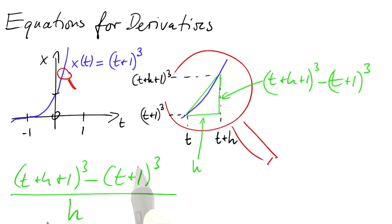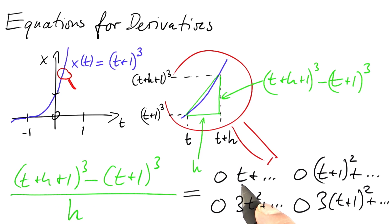Now comes the question, if h is really small, what would this expression become? Would it become t plus something that can be neglected for very tiny h? Would it become t plus 1 square plus something that we can neglect? 3t square plus something that can be neglected or 3 times t plus 1 square plus something we can neglect?